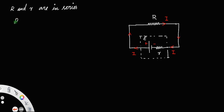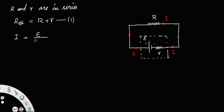Since R and r are in series, their effective resistance R_effective = R + r — let us call that equation 1. The current I equals voltage divided by effective resistance, so I = E / (R + r) — that is the equation for current.